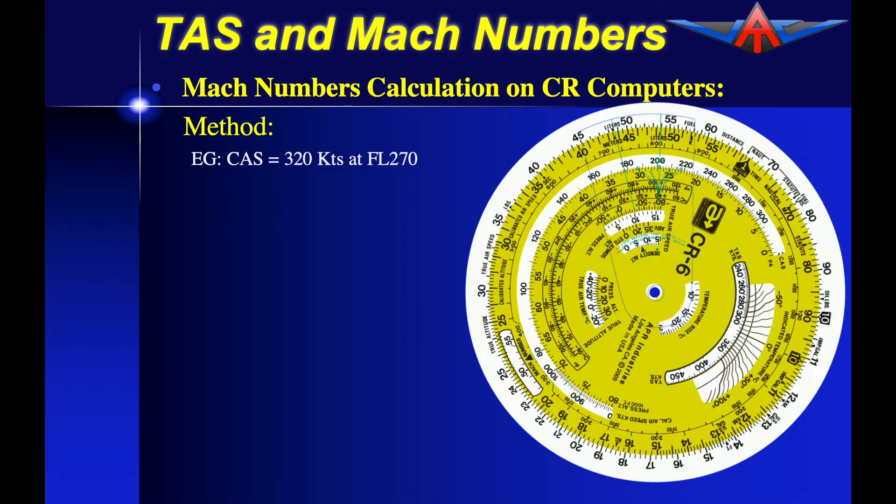Let's look at the calculation of Mach numbers on the navigation computers. I'm going to illustrate this first of all on the APR CR6 navigation computer. The example we're going to look at is a calibrated airspeed of 320 knots flying at flight level 270.